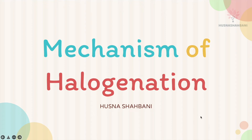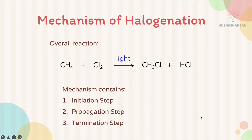Mechanism of Halogenation. Start the mechanism by writing the overall reaction. For example, methane reacts with chlorine in the presence of light or heat to produce chloromethane and the side product HCl. One chlorine atom replaces one hydrogen atom in methane to produce chloromethane and HCl.